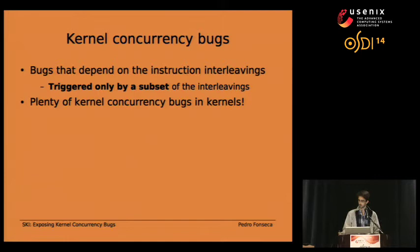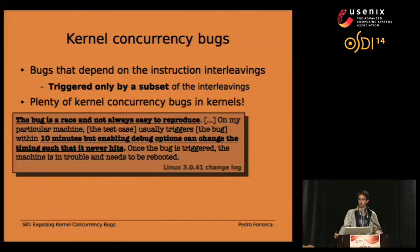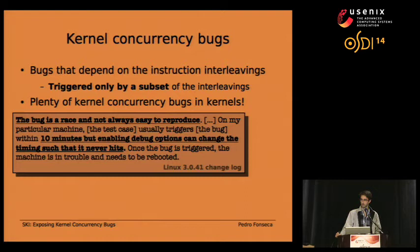If we go to the bug logs, we'll find examples like this one. Users found a problem in the kernel, developers tried to analyze it, and eventually concluded it was caused by a concurrency bug. They said it was not easy to reproduce. Eventually they managed to build a test case to reproduce the bug, but it could take up to ten minutes. Enabling certain debugging options would change the timing in such a way that it made the test case unable to reproduce the bug.